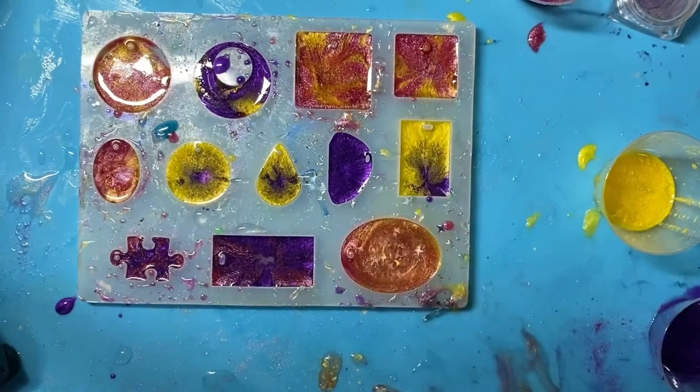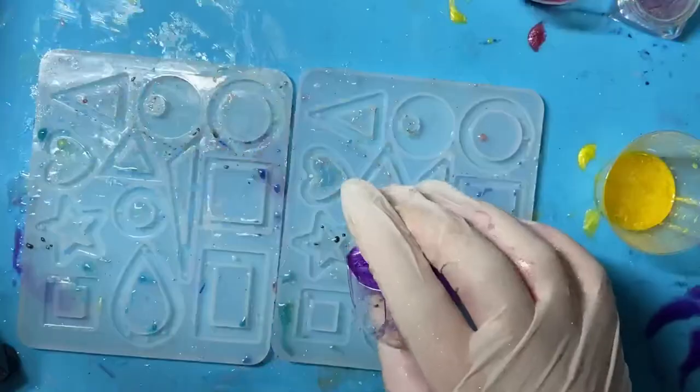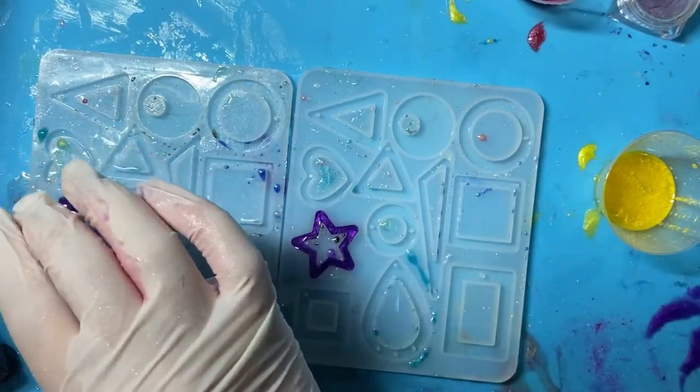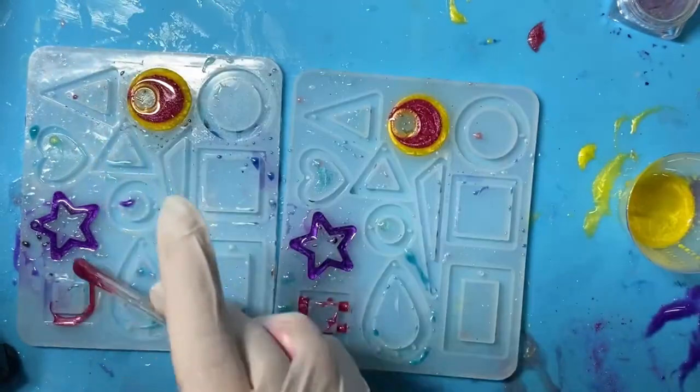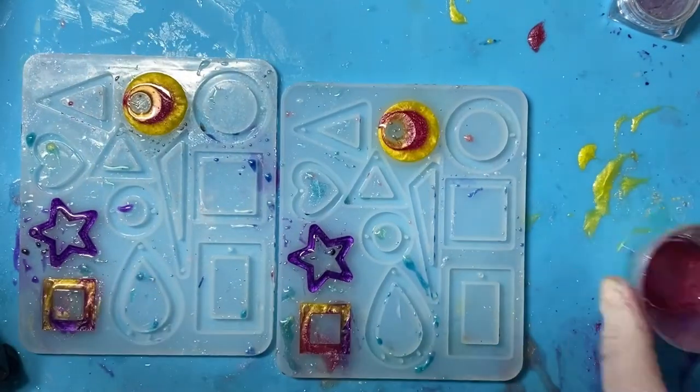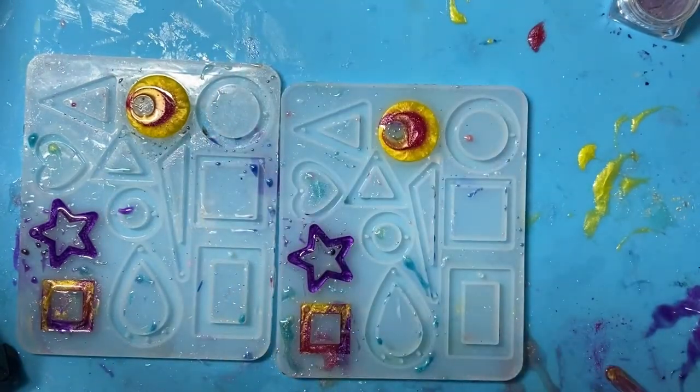And then when I had pretty much done all that I could in the necklace area, I went ahead and did this earring silicone molds. I practically used everything that I had left. So all of the yellows and the pinks and the purples. And now we wait 24 hours.